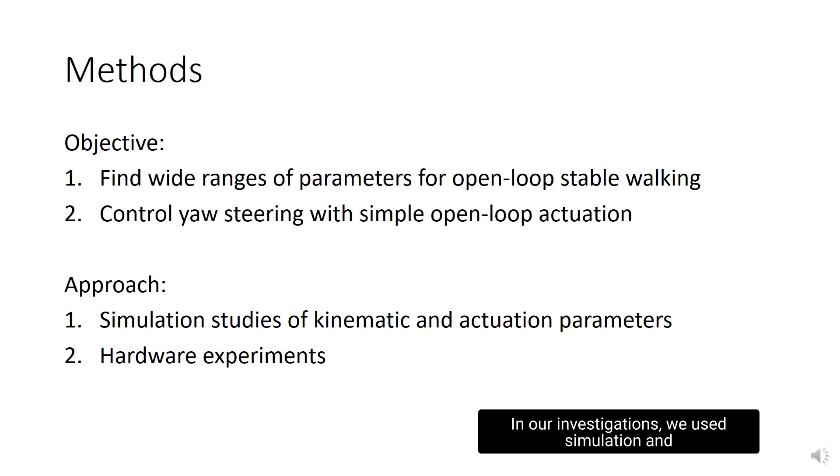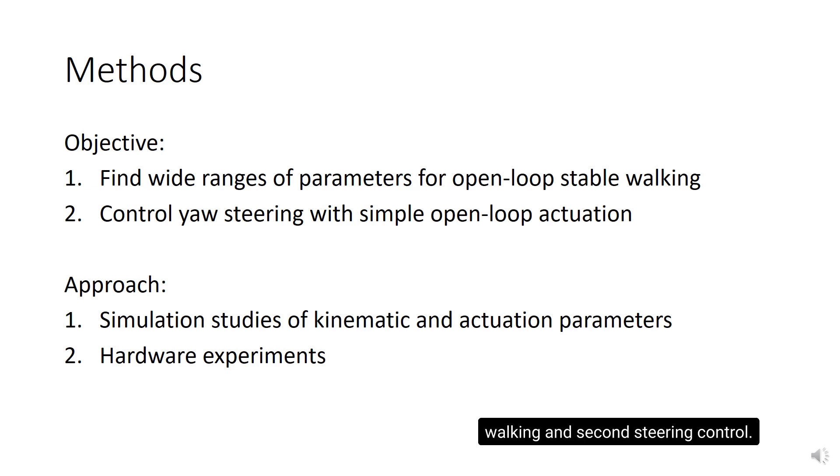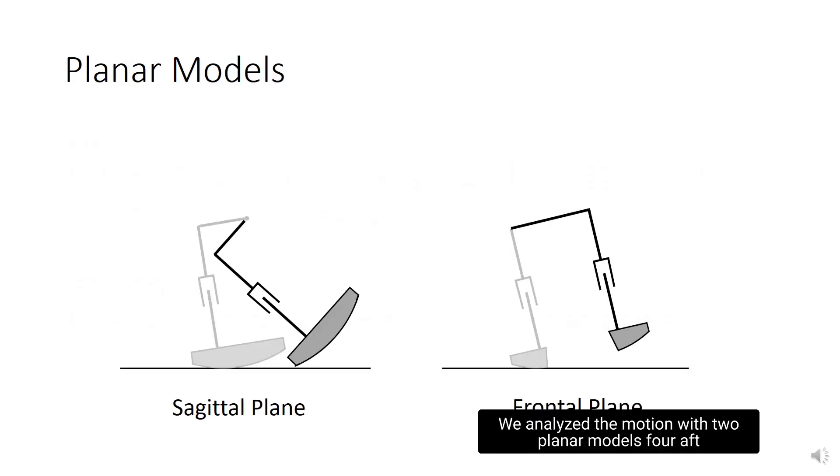In our investigations, we used simulation and experiment to seek first, robot designs and actuation parameters that produce open-loop stable walking, and second, steering control using only the two-leg actuators. We analyzed the motion with two planar models, the fore-aft leg swing sagittally and side-to-side rocking frontally.